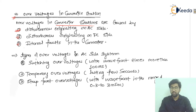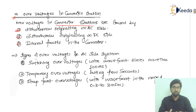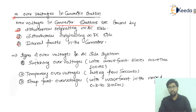The third cause is internal faults in the converter station. Whenever there is an internal fault in the converter station — for example, if the connection is not appropriate — there may be over-voltages caused due to internal faults in the converter. These are the three important points.